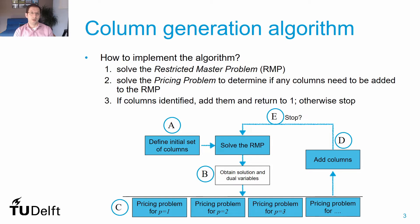When we solve the RMP using an LP solver we obtain not only the solution to our RMP but also the value of the dual variables. The dual variables give us information about how to improve the objective function in our RMP — that is point B. These dual variables are essential for us to understand which columns to add. This is done by solving what we call the pricing problem, which can be straightforward or a new optimization problem that helps us create new columns to add to our RMP — that is point C.